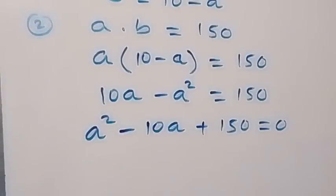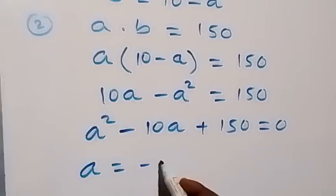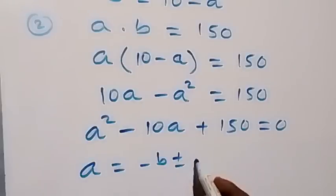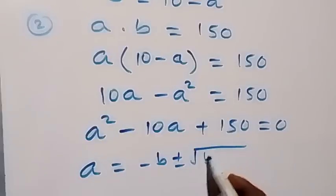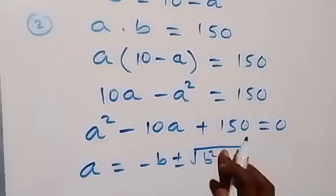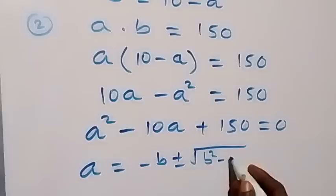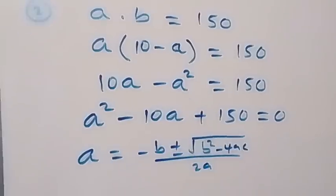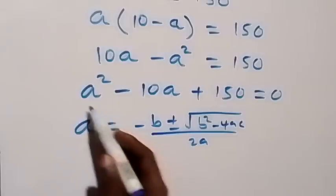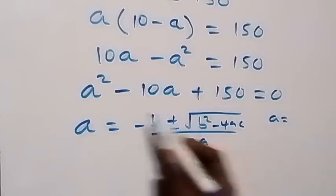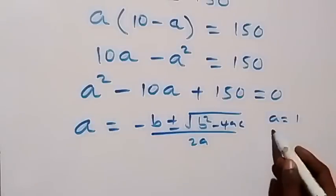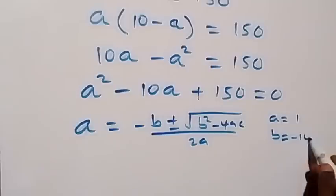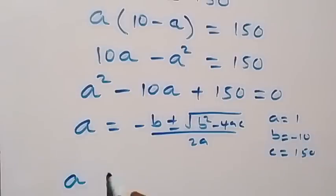We can solve this quadratic equation using the formula: A equals minus B plus or minus square root of B squared minus 4AC, over 2A. In this formula, A is the coefficient of A squared, which is 1, B is minus 10, and C is 150.